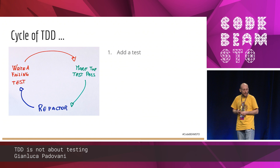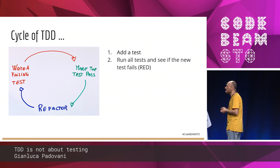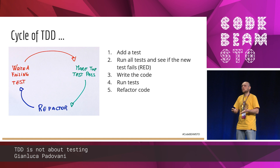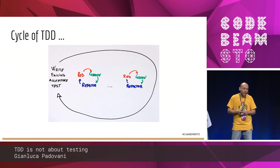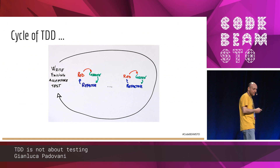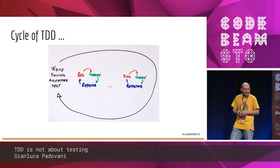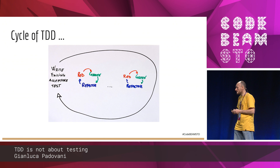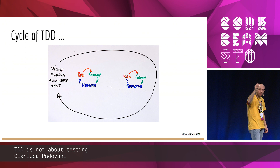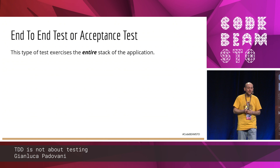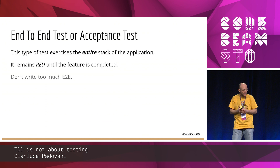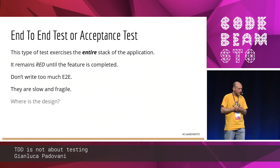If you go back to the definition of TDD, there is nothing written saying you should write only unit tests — they talk about tests. So why not put another loop that takes all your features and writes a failing acceptance test — for me acceptance test and end-to-end test are the same — that takes care of all your features. This type of test exercises the entire stack of your application, remains red until the feature is completed, and don't write too many end-to-end tests because they are slow and fragile.